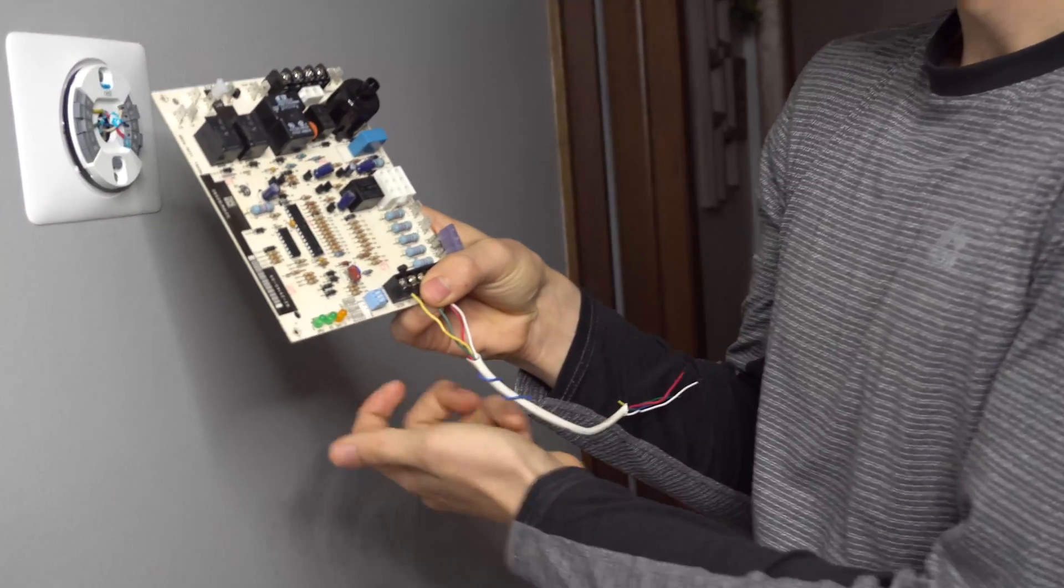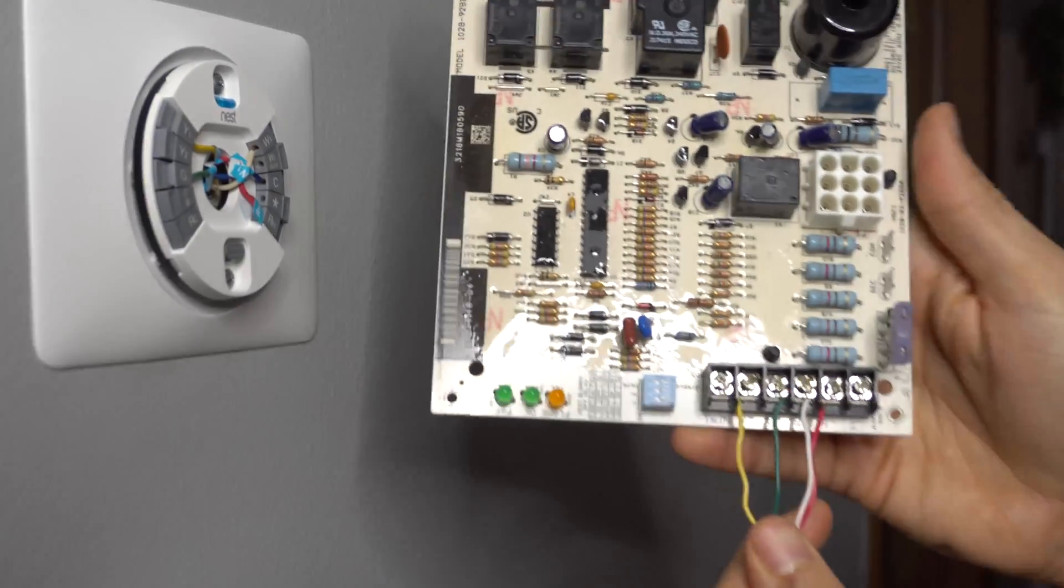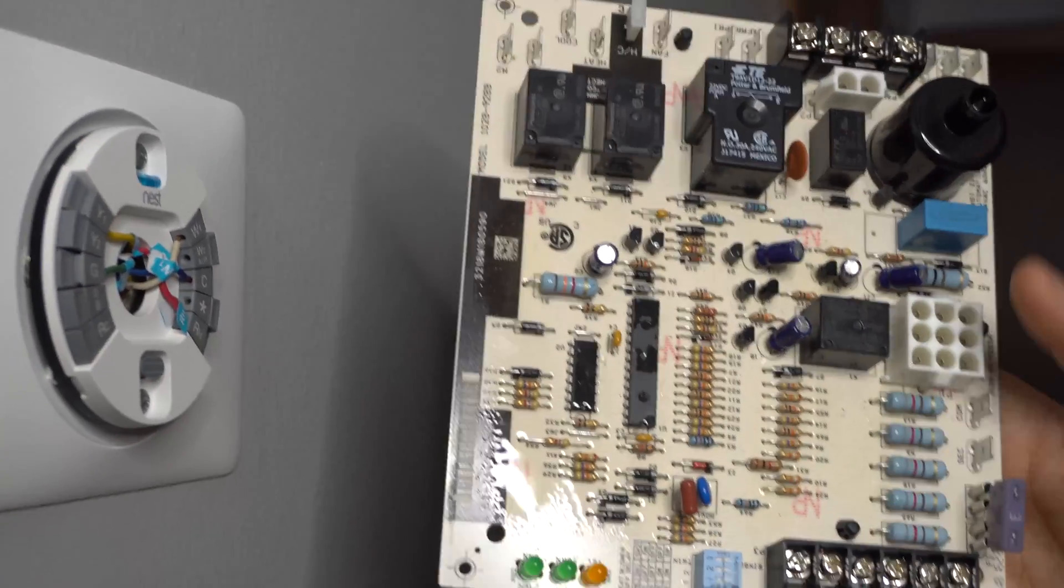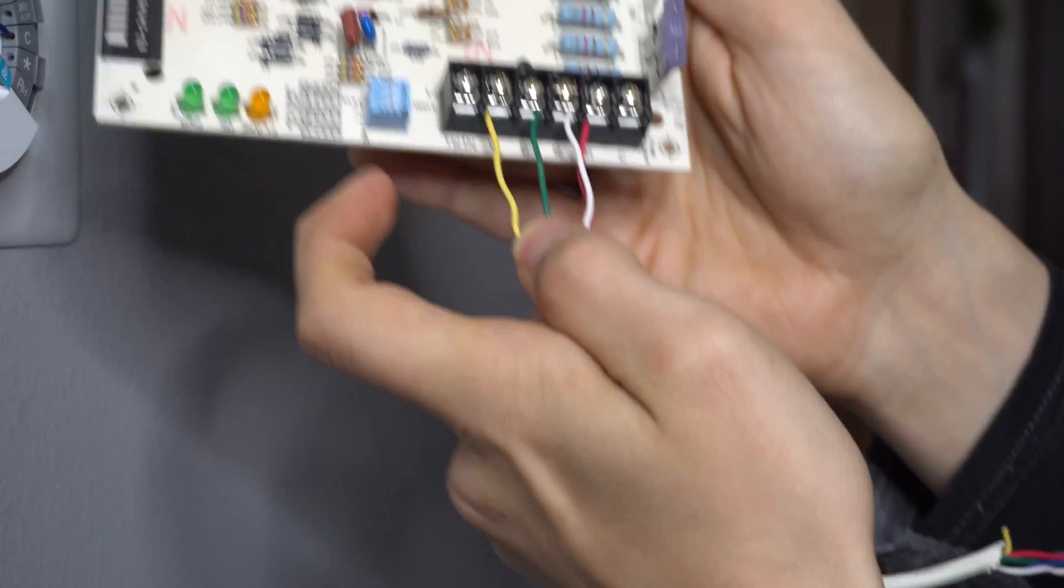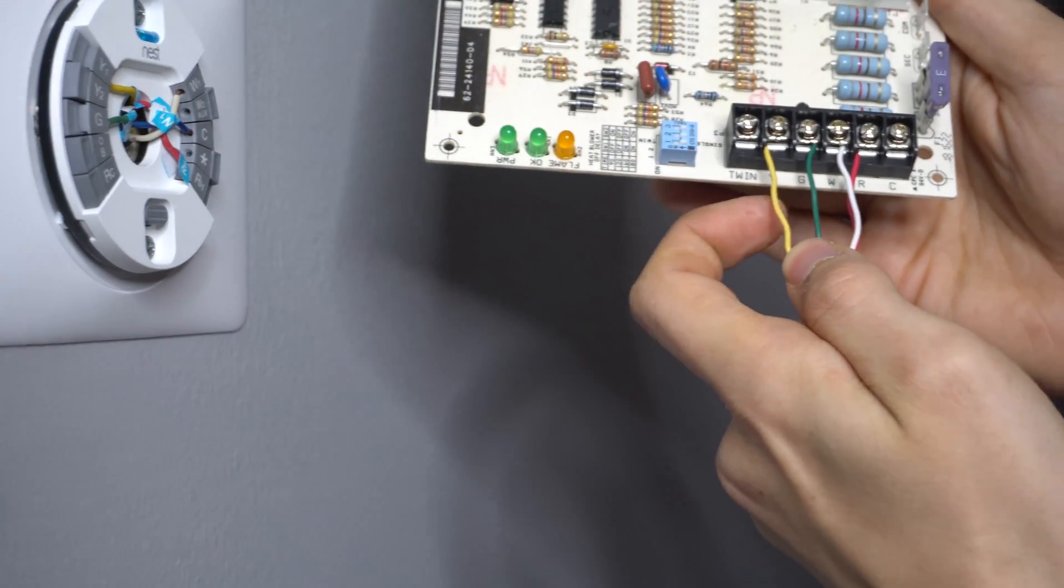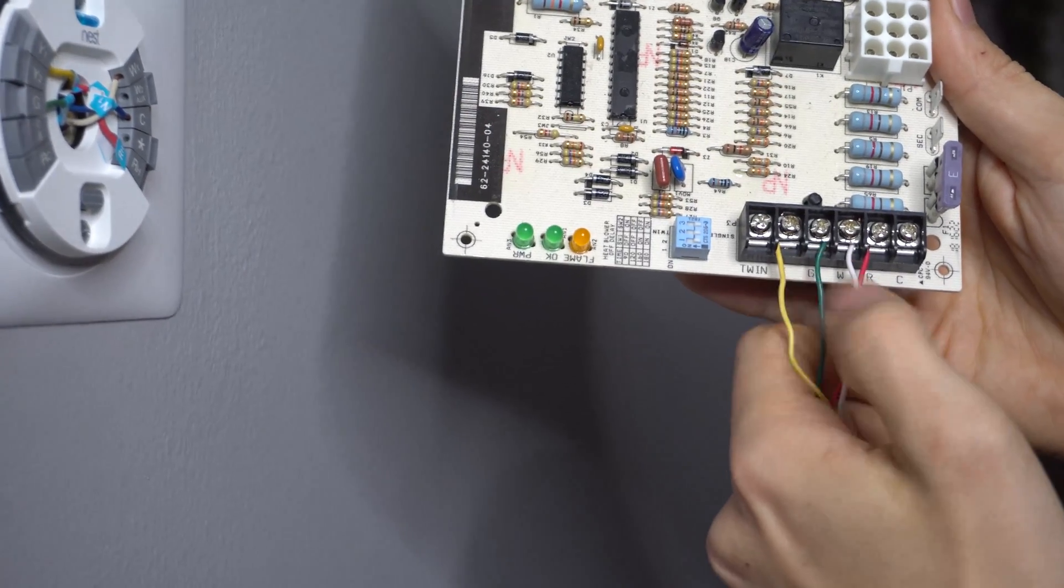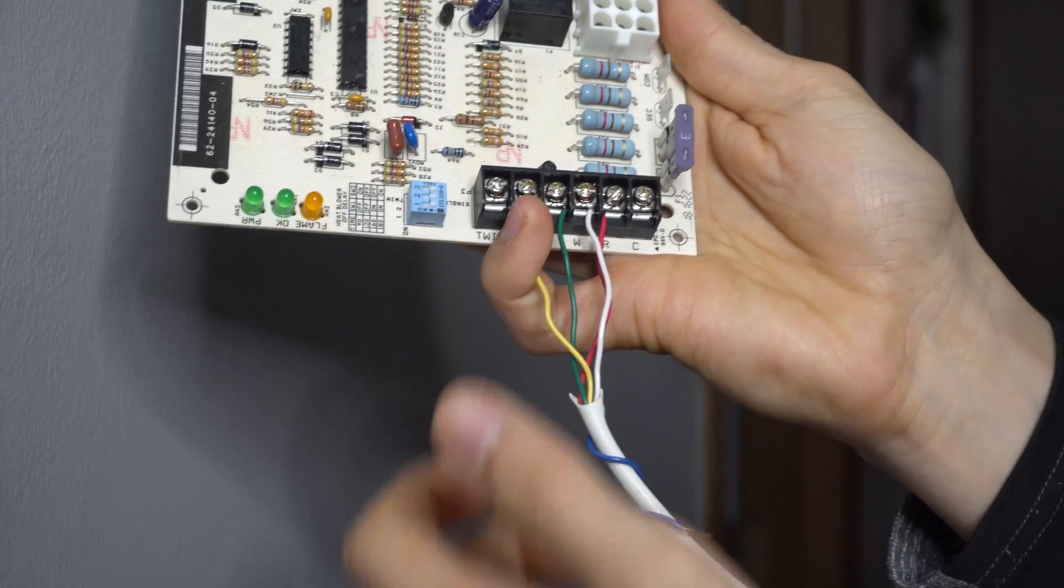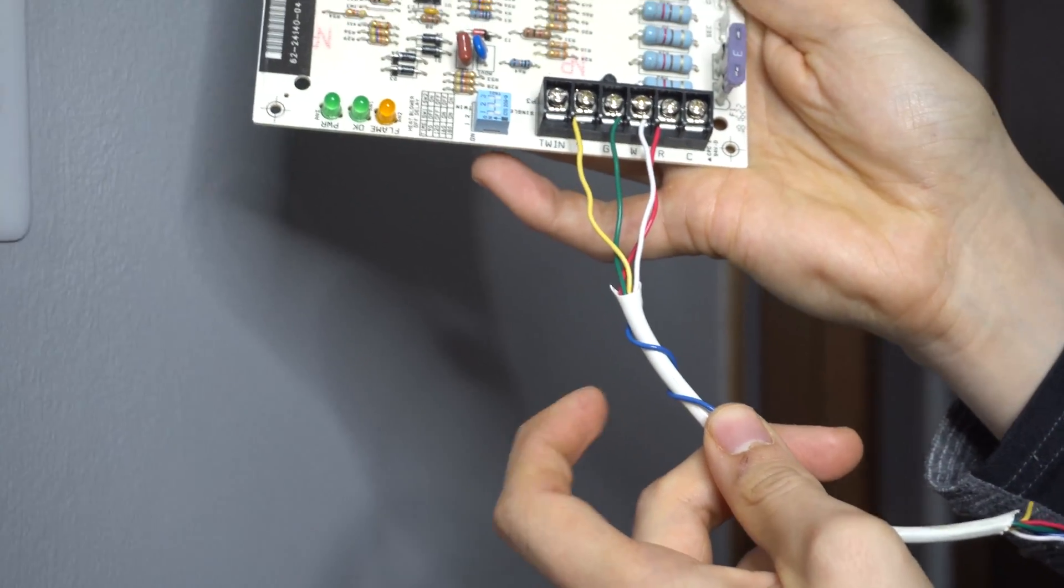So if you go down to your furnace or your air handler, open it up. Pretty much most control boards will be similar to this. They all look different, but almost all of them will have a terminal block like this, which is similar to what your thermostat has. They're all labeled. You got the Y, G, W, R, and C with little thermostat wires going to them. And these thermostat wires, the four wires, they come from your thermostat to your furnace.